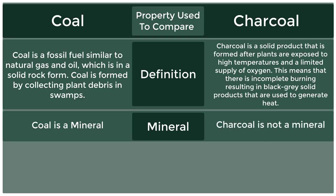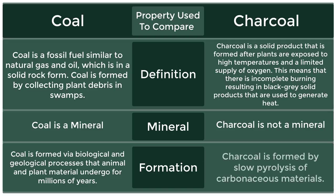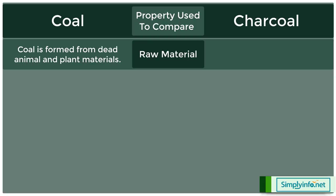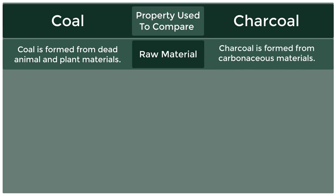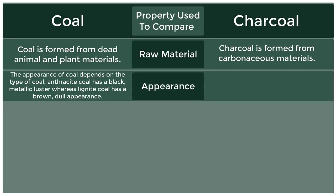Formation of coal: coal is formed by biological and geological processes that animal and plant material undergo for millions of years. Formation of charcoal: charcoal is formed by slow pyrolysis of carbonaceous materials. Raw material — coal: coal is formed from dead animal and plant materials. Raw material — charcoal: charcoal is formed from carbonaceous materials.